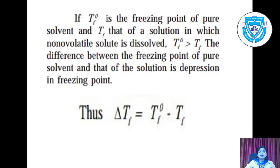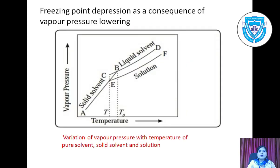If T0F is the freezing point of the pure solvent and Tf is that of the solution in which a non-volatile solute is dissolved, then T0F is greater than Tf. The difference between the freezing point of the pure solvent and that of the solution is the depression in freezing point. Thus we have delta Tf which is equal to T0F minus Tf.